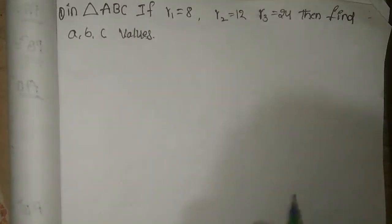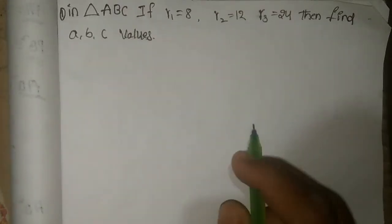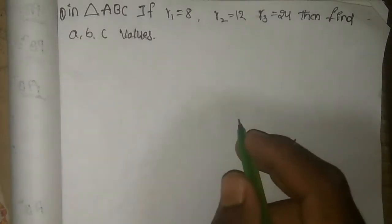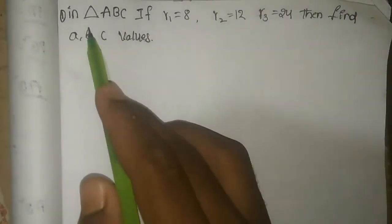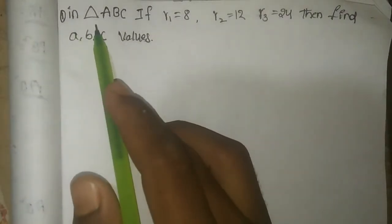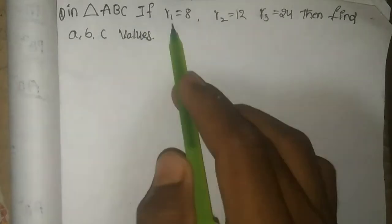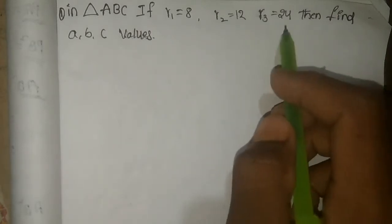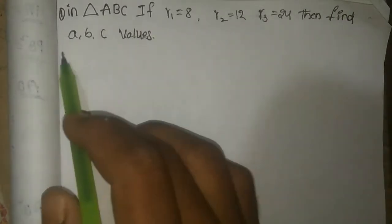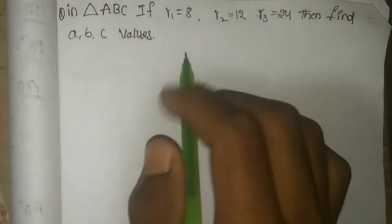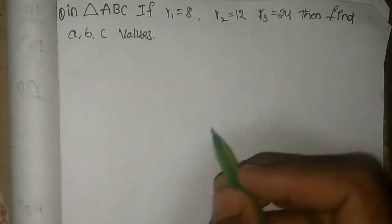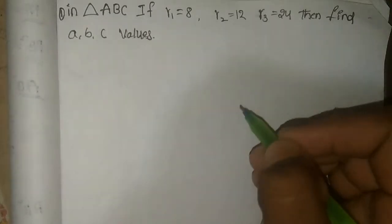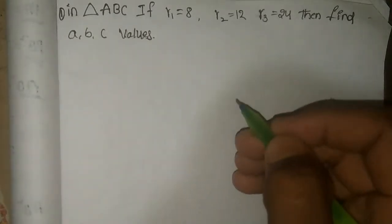Hello friends, today we are solving a 7-mark, very important problem for first-year students. So in this given problem, in triangle ABC, if R1 is equal to 8, R2 is equal to 12, R3 is equal to 24, then find the ABC values. So first we have to understand the problem — what they give and what we want to find.